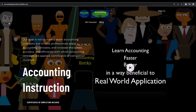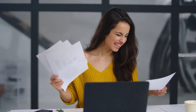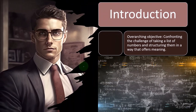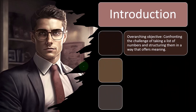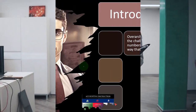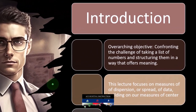Consider subscribing at accountinginstruction.com or accountinginstruction.thinkific.com for a commercial-free experience. When we have a long list of numbers, we want to summarize them in a way that extracts meaning using two primary types of tools: numerical summaries — including the mean, quartiles, and median — and pictorial representations such as box plots and histograms.